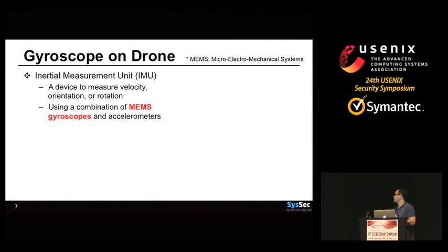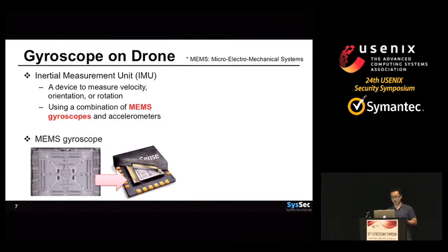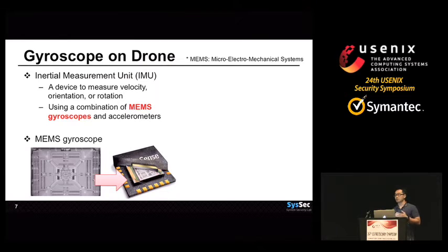The inertial measurement unit is a set of sensors which measures orientation or rotation of the drone's body. One of the main sensors in the IMU is the MEMS gyroscope. MEMS means a very small machine or mechanical structure. Because of MEMS technology, the gyroscopes are integrated into a small chip, so today they are more and more popular.